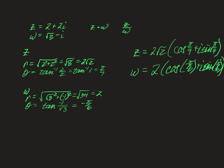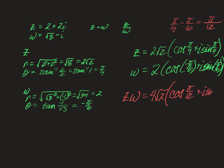Now find zw: multiply the radii — 2 times 2√2 is 4√2 — and add the angles: pi over 4 plus negative pi over 6. Pi over 4 minus pi over 6 with common denominator 12 gives 3pi over 12 minus 2pi over 12, which is pi over 12. So zw equals 4√2 times cosine pi over 12 plus i sine pi over 12.